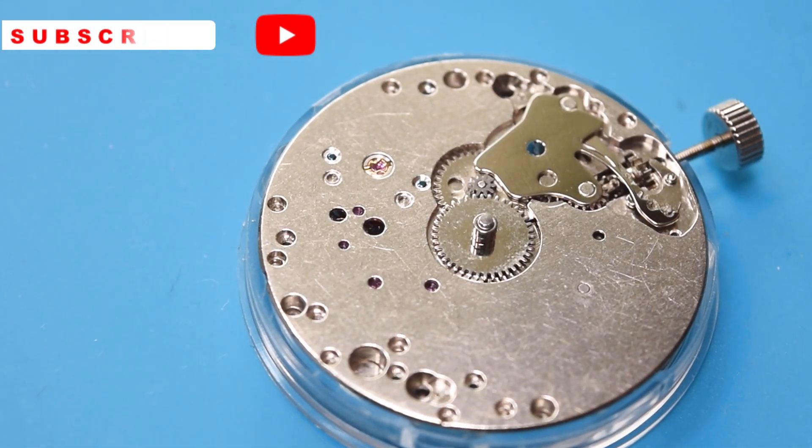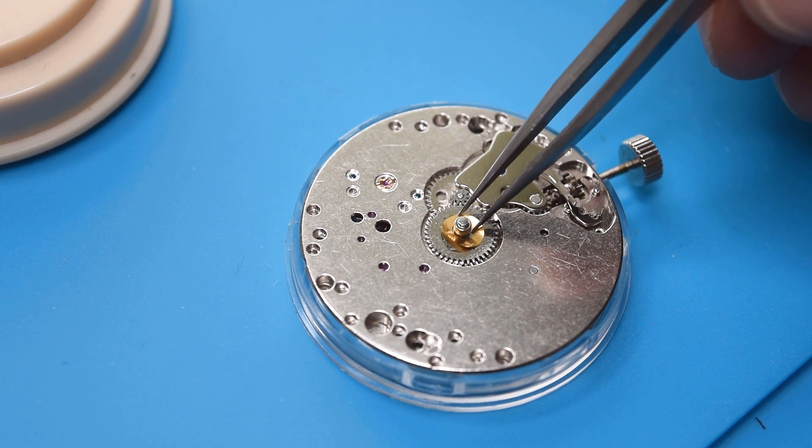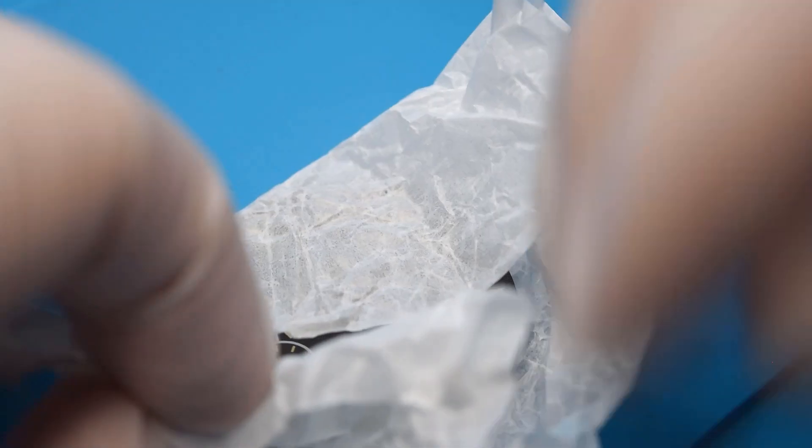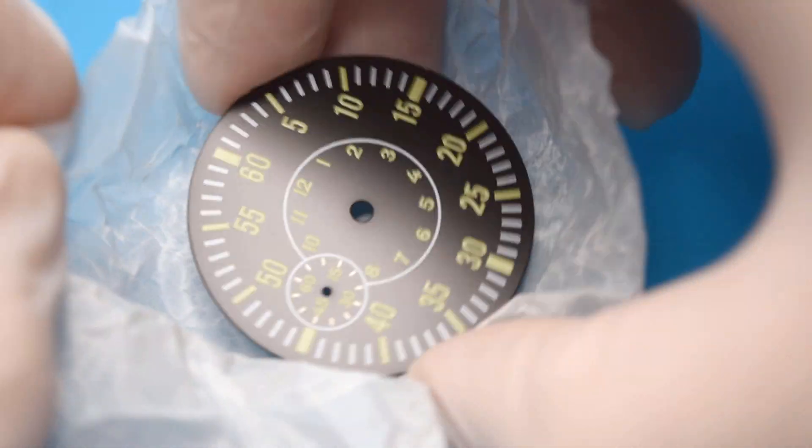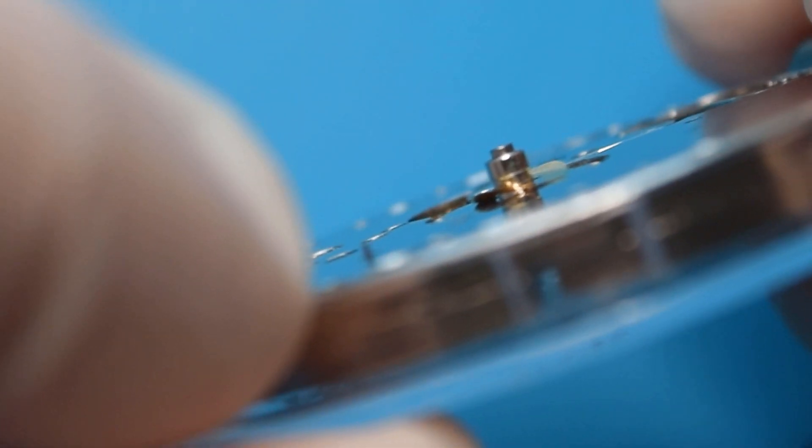First thing that I'm doing here is preparing the movement to be cased. What I have done was oiling a little bit the canyon pinion and now the hour wheel is on place. When you will be installing the dial, watch out here on this small pinion from the second hand.